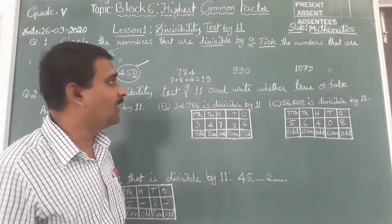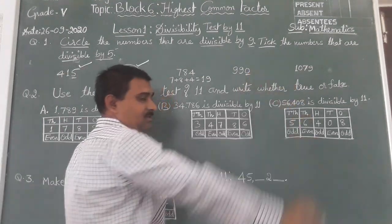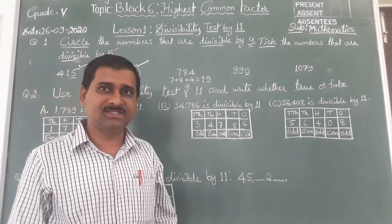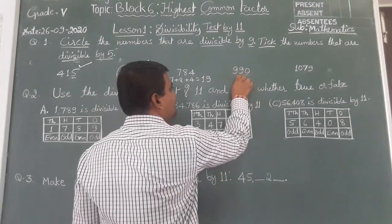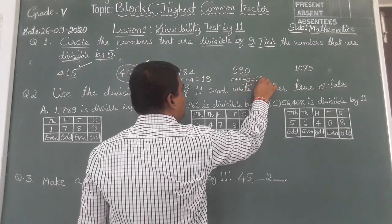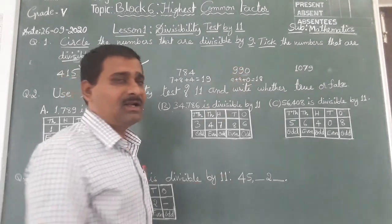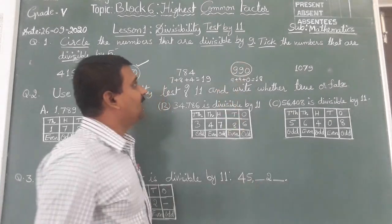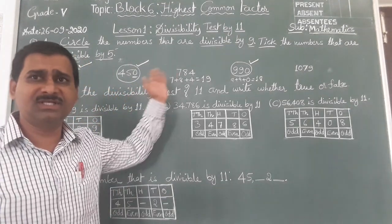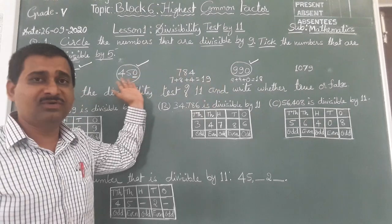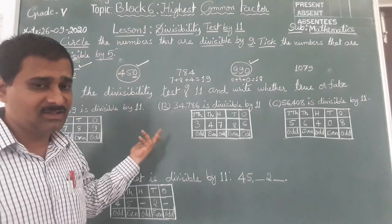990 is divisible by 5 because in the 1's place you will find 0. Let us check whether it is divisible by 9: 9 plus 9 plus 0 is 18. 18 is divisible by 9. Therefore, 990 is divisible by 9 — circle it. It is also divisible by 5. These two numbers are both divisible by 9 and 5, so we have to circle and tick mark.